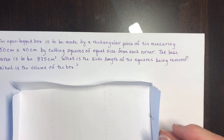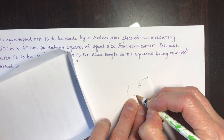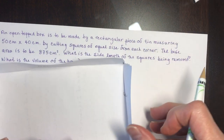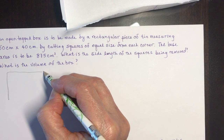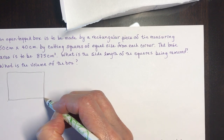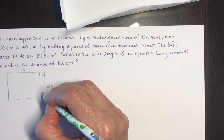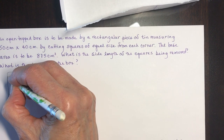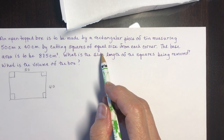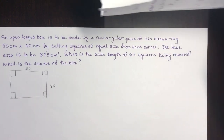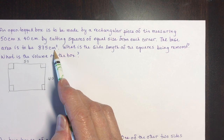Each corner cut out was x by x — a square of side x. Drawing it flat: we had a 50 by 40 piece. We cut squares from each corner. It says: cut squares of equal sides from each corner; the base area is to be 875 centimeters squared.